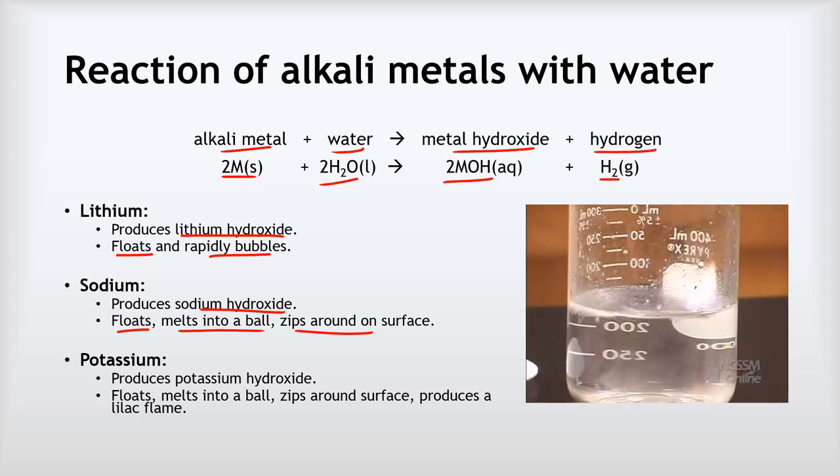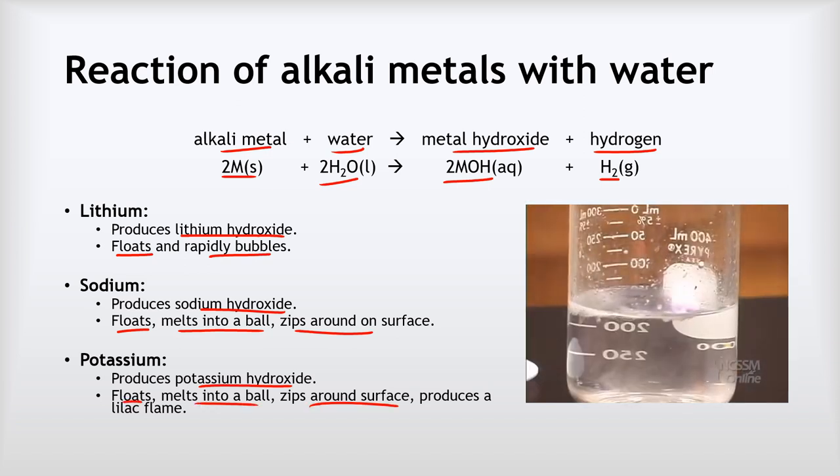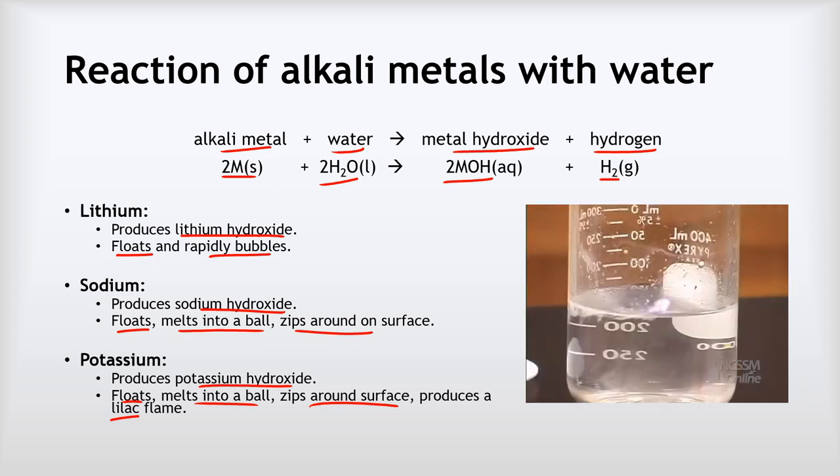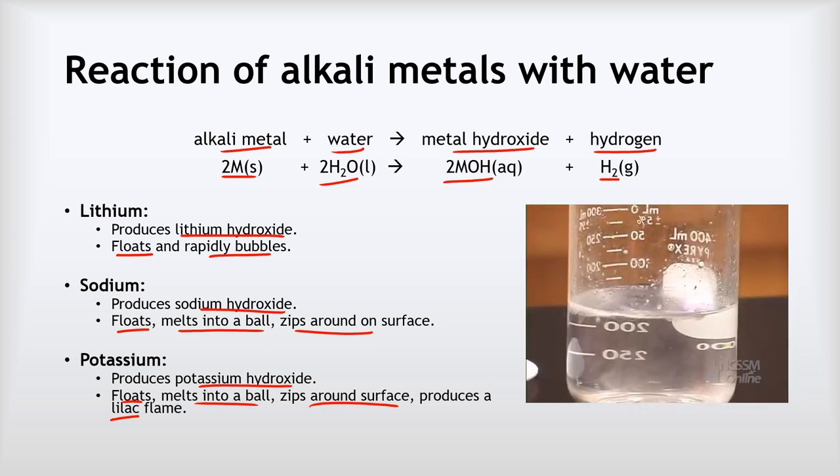And lastly for potassium, you can see that it produces potassium hydroxide. The observations for this are that it floats, it melts into a ball again, it zips around on the surface, and it produces this lilac flame. Lilac being that kind of light purple color that you can see if you look really carefully. What also might happen with potassium is it might sort of pop and make a little small explosion, but the main observation we're looking for is that lilac flame.